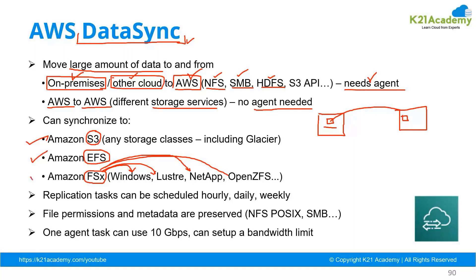You can schedule the sync timing. It could be hourly, daily, or on a weekly basis. One agent will use 10 Gbps of bandwidth for completing this replication task.